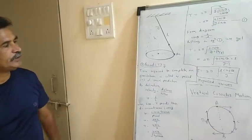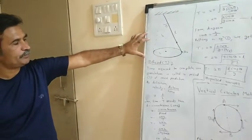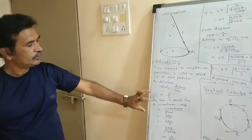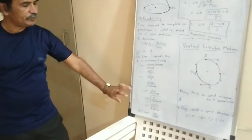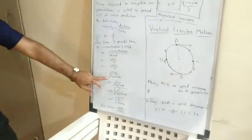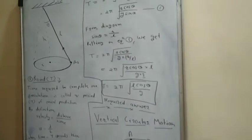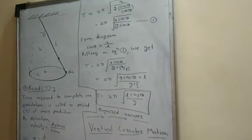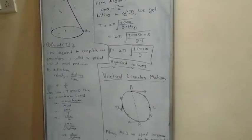In examinations, you should know the diagram, the standard formula, and the value of v, and by mathematics we can get the answer. Now let us move to the next topic of this chapter: the concept of vertical circular motion.